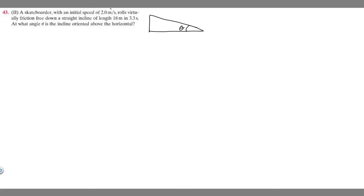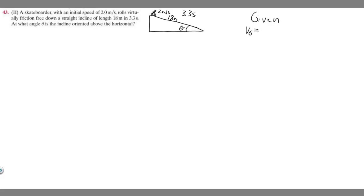So what do we know? We know the initial speed of our skateboarder. Imagine this is going to be our skateboarder. We know their initial speed is going to be 2 meters per second. So given: the initial velocity, or v₀, is going to be 2 meters per second.